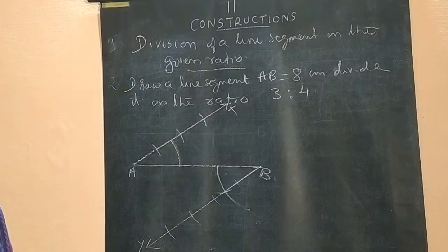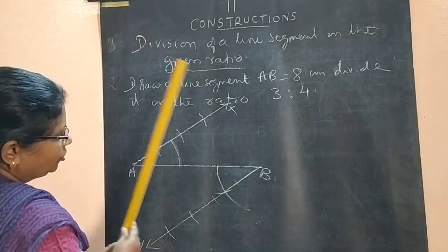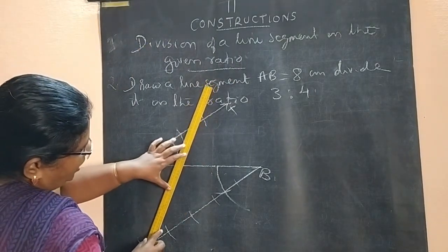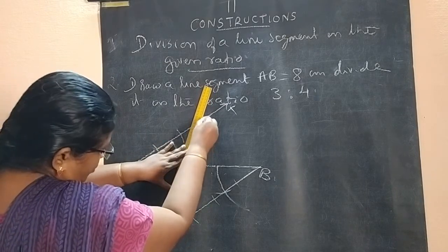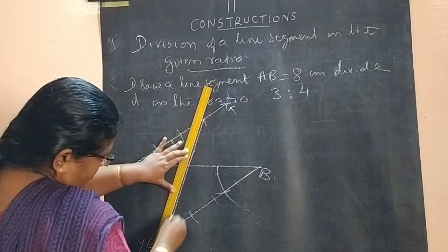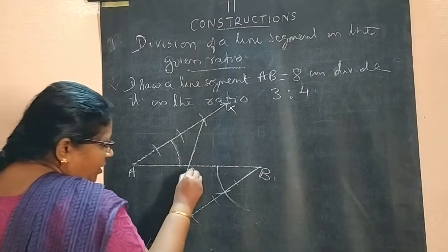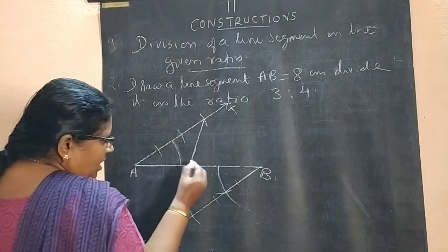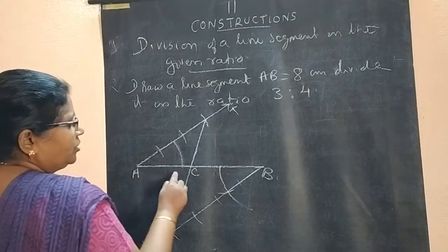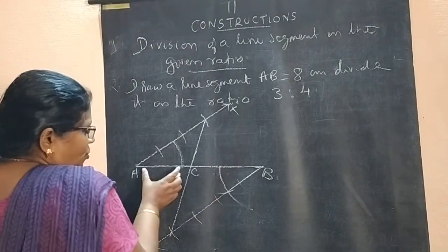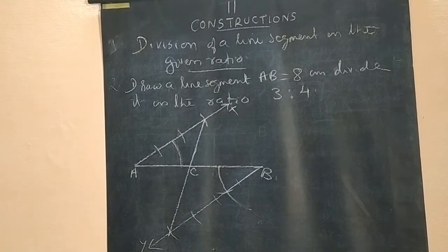Now, what you have to do is the 3rd portion and the 4th portion just join. The 3rd portion and 4th portion join like this. Now you see, here one point you got. So here AC and CB will be in 3 is to 4 ratio. This length and this length will be in 3 is to 4 ratio.